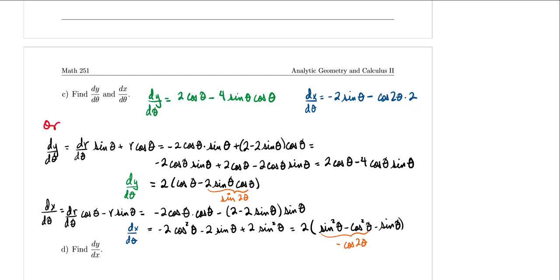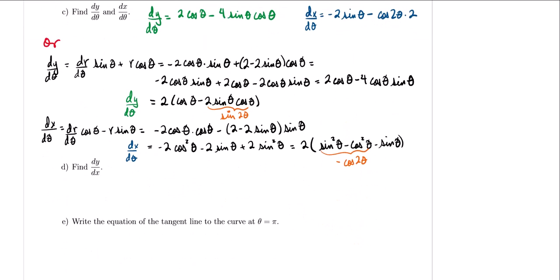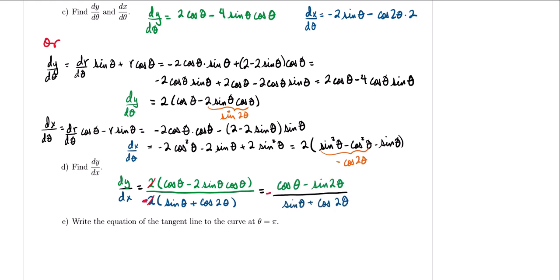Now that we've solved both approaches, let's find dy/dx. The numerator, factoring out 2, is 2(cosine theta minus 2 sine theta cosine theta), and the denominator is negative 2(sine theta plus cosine 2θ). Canceling the 2's, our dy/dx equals negative(cosine theta minus sine 2θ) divided by (sine theta plus cosine 2θ). Now let's write the equation for the tangent line when theta equals π. The equation for a line is y minus y1 equals m times (x minus x1).